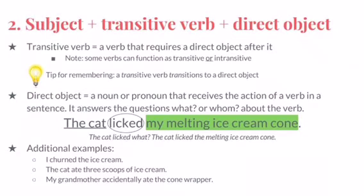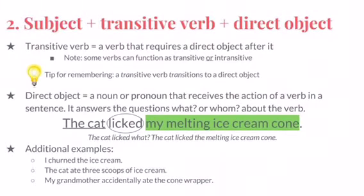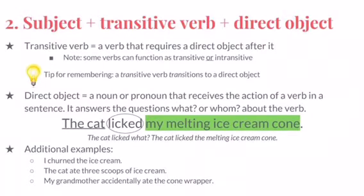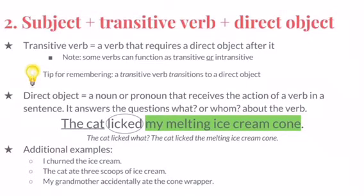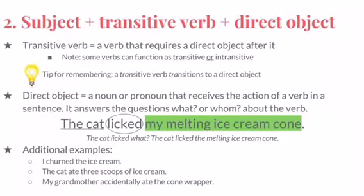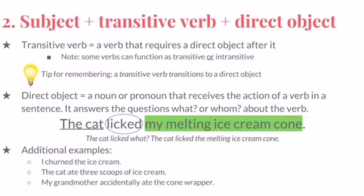The direct object answers the question 'what' or 'whom' about the verb. Take a look at the example: 'The cat licked my melting ice cream cone.' The complete subject is underlined, the transitive verb is circled, and the direct object is highlighted. In this case, the direct object tells us what the cat licked — the melting ice cream cone. Practice identifying the subject, transitive verb, and direct object in each of the additional examples at the bottom of the slide.